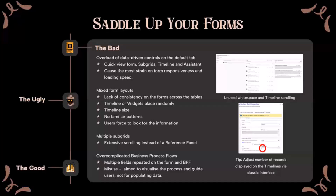On the other hand, it's bad practice to overload forms with data-driven controls like sub-grids, timeline, or lookups. They affect form loading speeds, which negatively impacts the UX. So limit the use of them, or at least avoid placing them on the first tab. Also, inconsistent layouts and overcomplicated business process flows look bad for UX. My other tip is about the timeline — by default it shows 10 activity records, but you can adjust that via the classic interface to better use up the space and limit excessive scrolling.